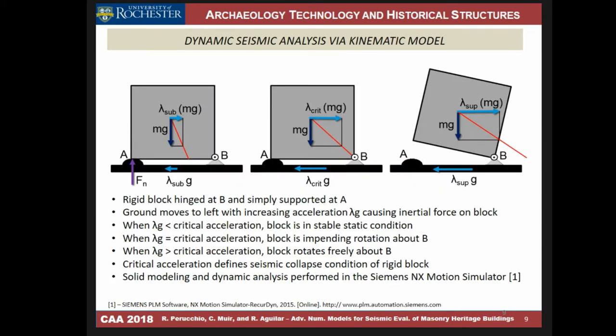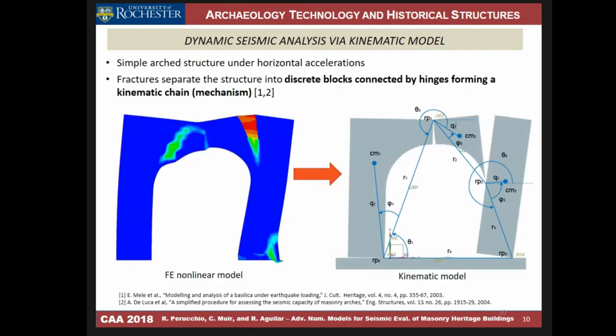The alternative procedure is based on a very simple consideration, illustrated here using a simple block. The block is supported at A and hinged at B, carried by a roller that is accelerating towards the left. Because of inertia, forces develop in the opposite direction, applied to the centroid of the block. Depending upon the acceleration of the supporting structure — simulating earthquake acceleration — these inertial forces produce a rotation, and you can numerically determine the value of acceleration that brings about collapse.